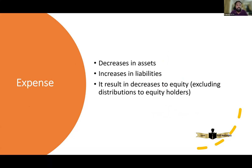Now the last definition: expense. Expenses cause a decrease in asset or an increase in liability. Let's take the example of a purchase. There are two types of purchase. One is cash purchase — if you purchase using cash, the cash balance will decrease, which is a decrease in asset. Or if you purchase on credit, the payable liability will increase.